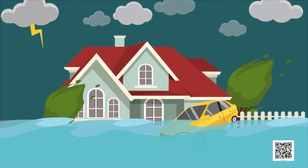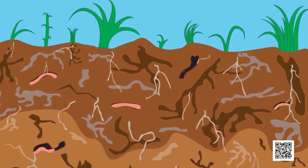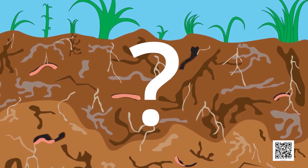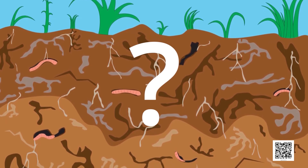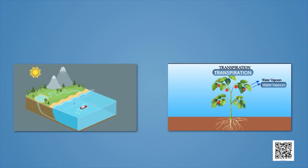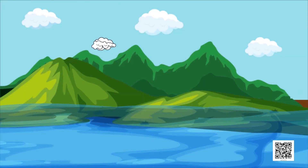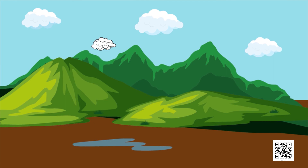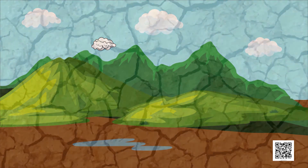Rains also affect the animals living in the soil. What happens if it does not rain for a long period? The soil continues to lose water by evaporation and transpiration. Since it is not being brought back by rain, the soil becomes dry. The level of water in ponds and wells goes down and some may even dry up. Groundwater may also become scarce, and this may lead to drought.